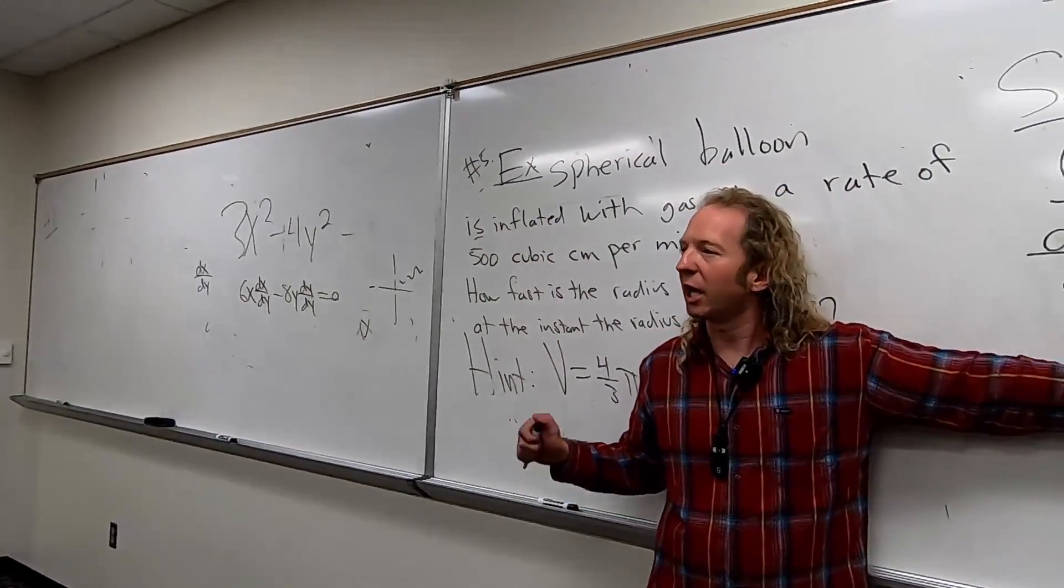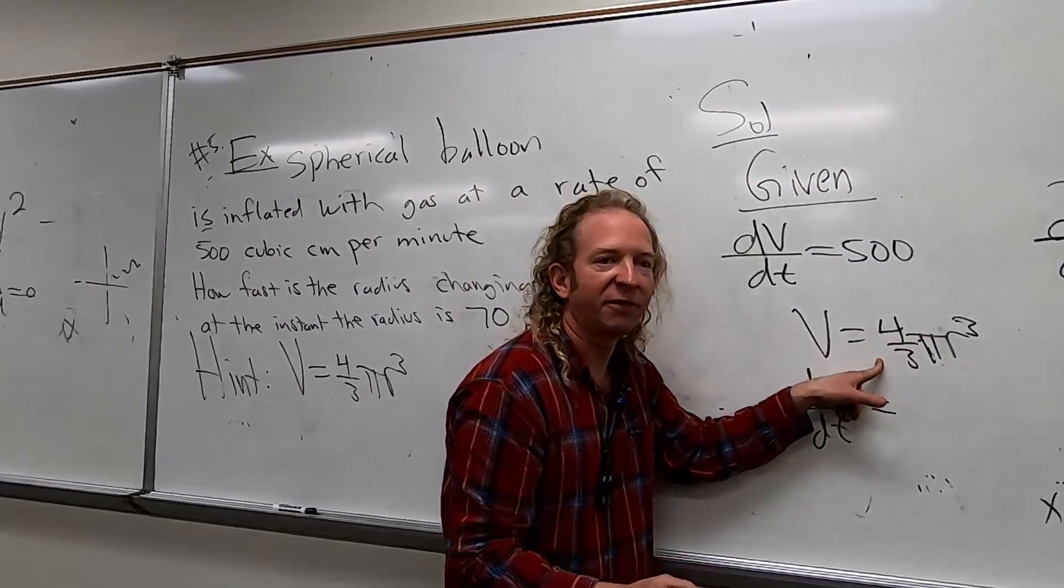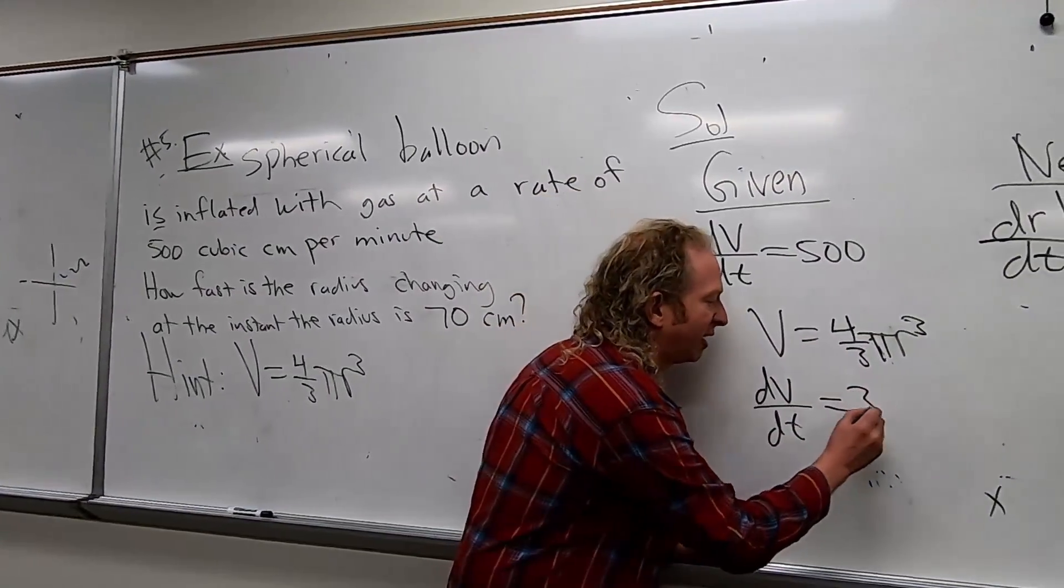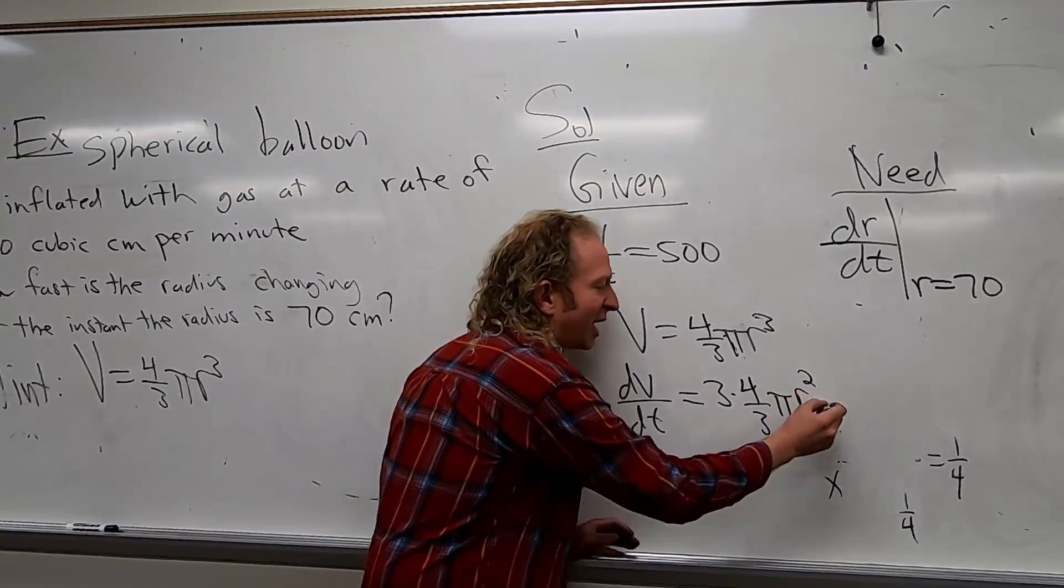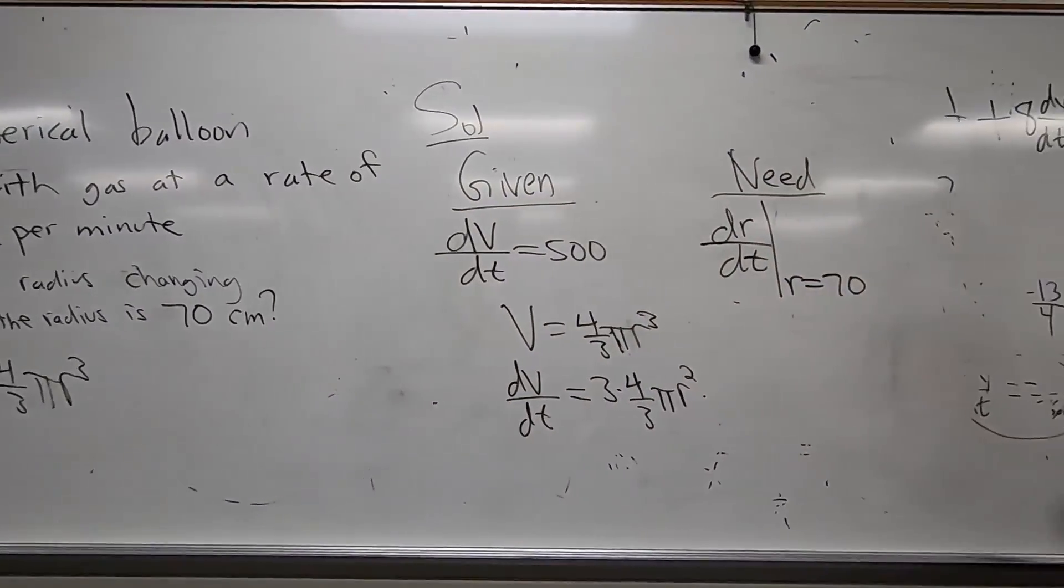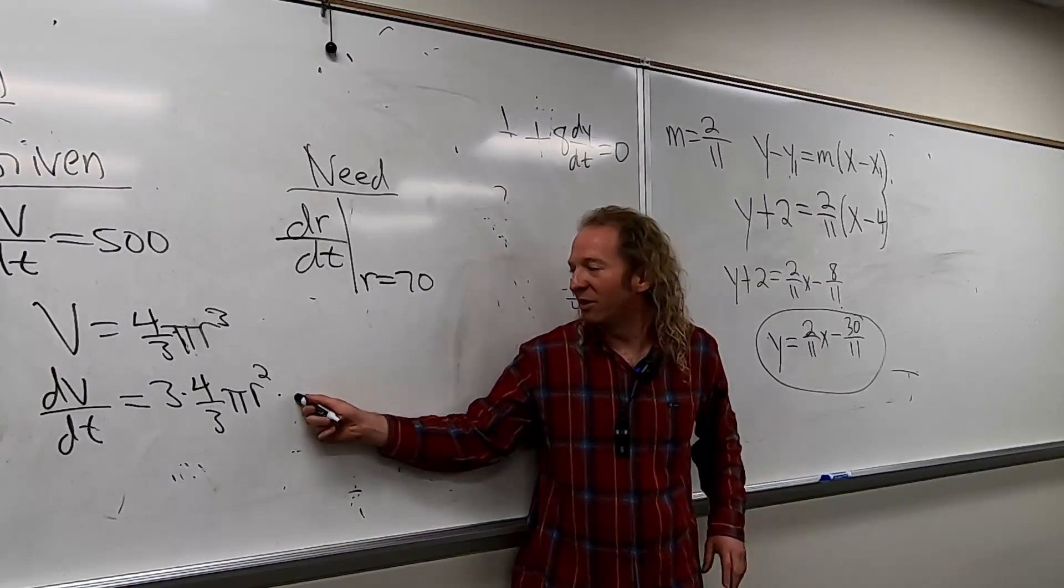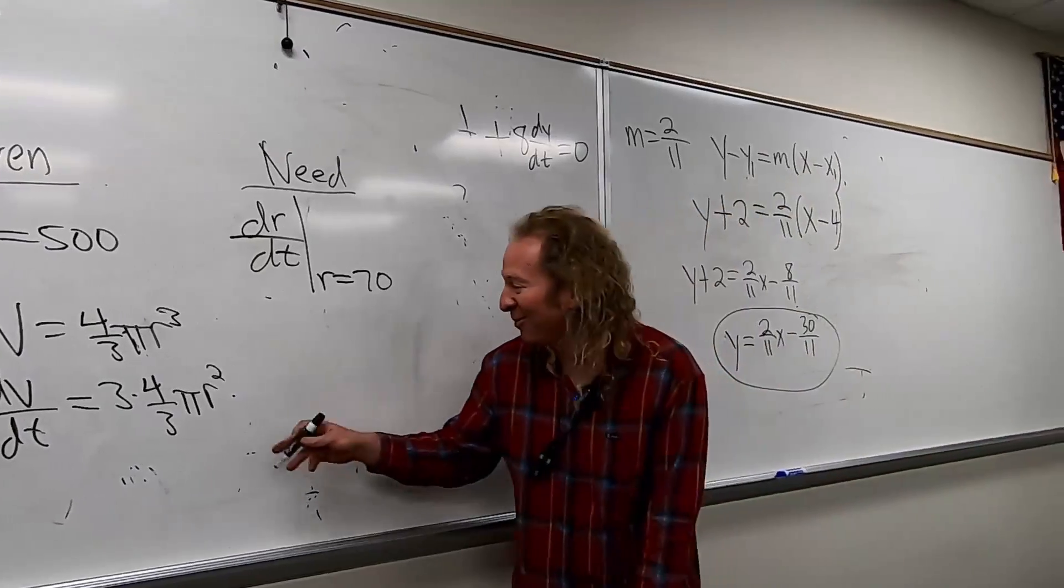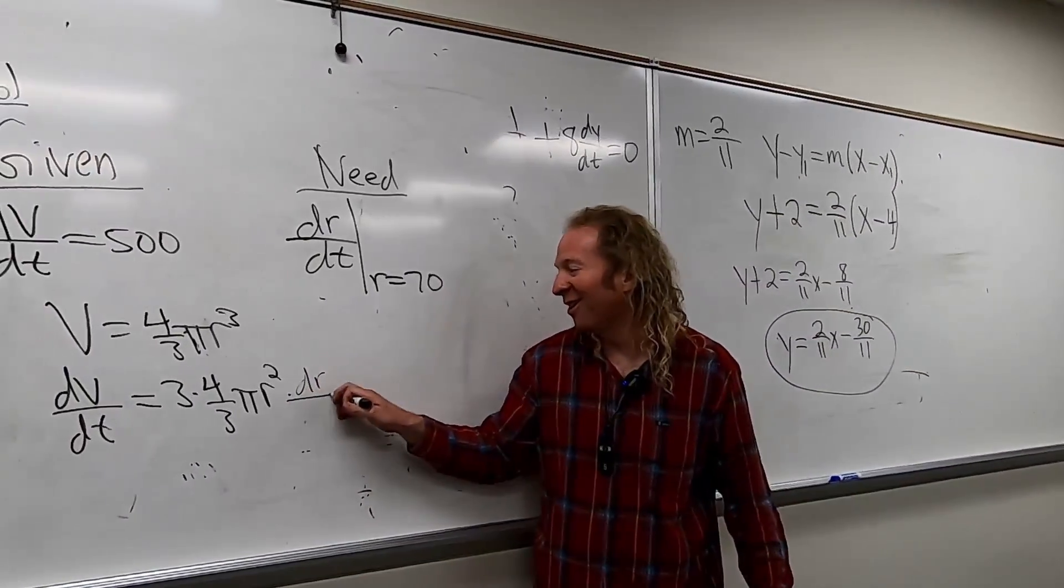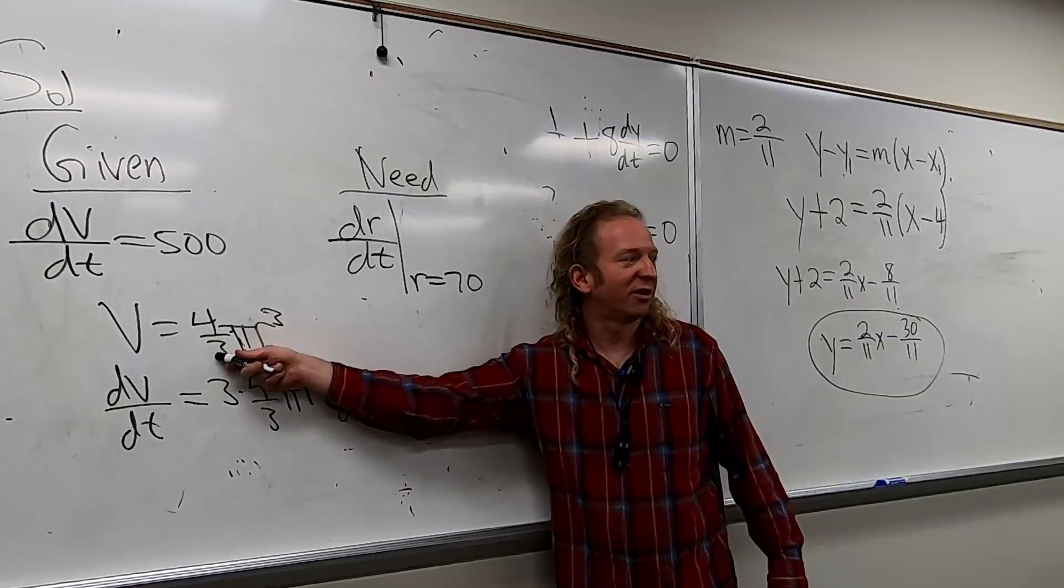4/3 pi is a constant. It hangs out. So what you do is you put the 3 in the front. So it will cancel. So you'll get 3 times 4/3 pi r squared times... Anyone know? What would go here? dr/dt. Oh my God. I can't believe someone knew. Good. dr/dt. That's the chain rule. Right? The derivative of the inside. Very good, Selena.